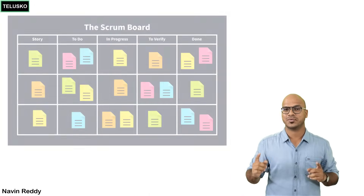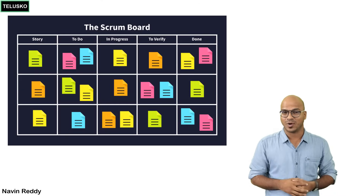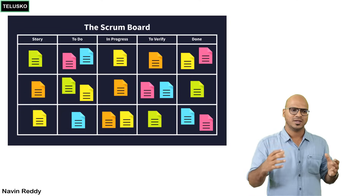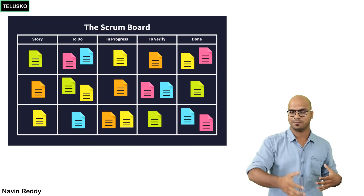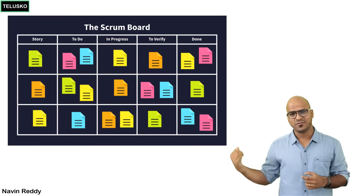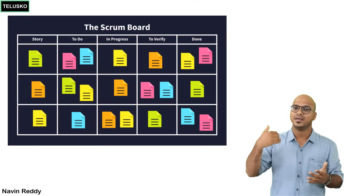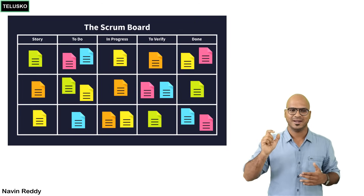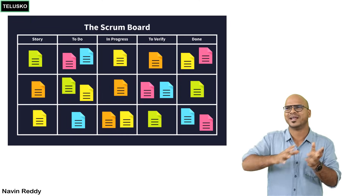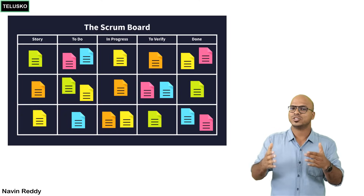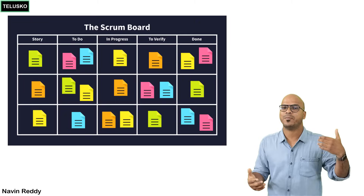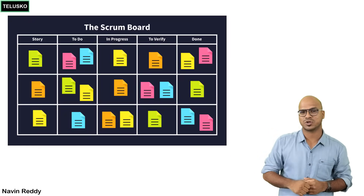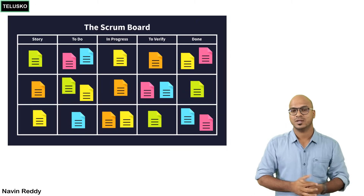To implement Scrum, you use a Scrum Board. With a team of six, everyone needs a clear picture of project progress. The board has columns: the full backlog, a to-do list of what's up next, what's currently being worked on, and what's done. The 'done' definition in Agile means 'done done' — not 75% or 80% done. When you say it's 100% done, it means it is developed, tested, and ready for shipment.